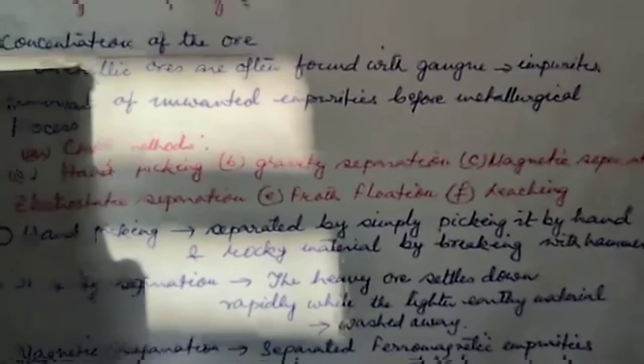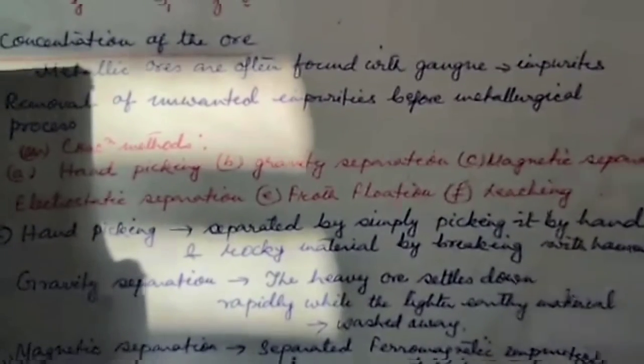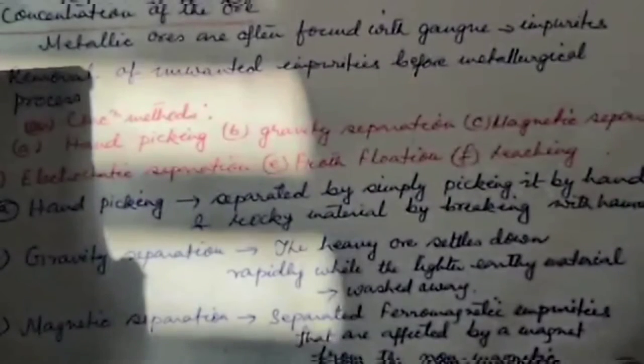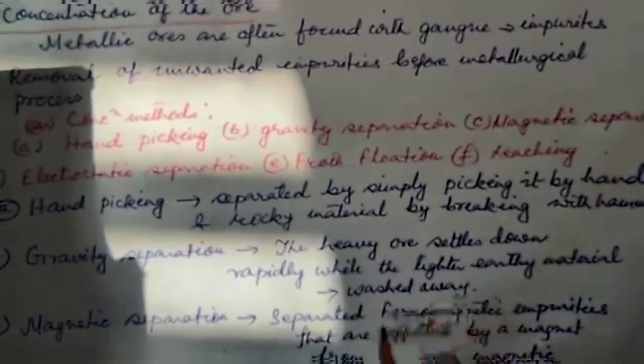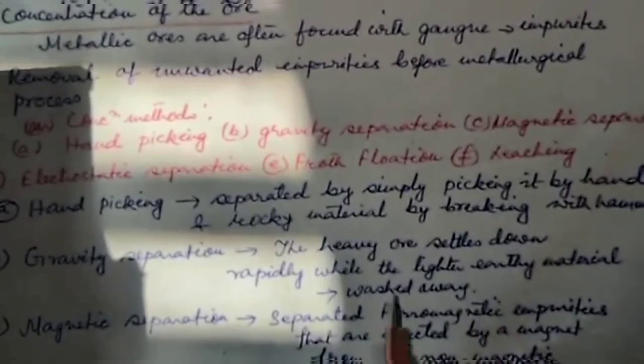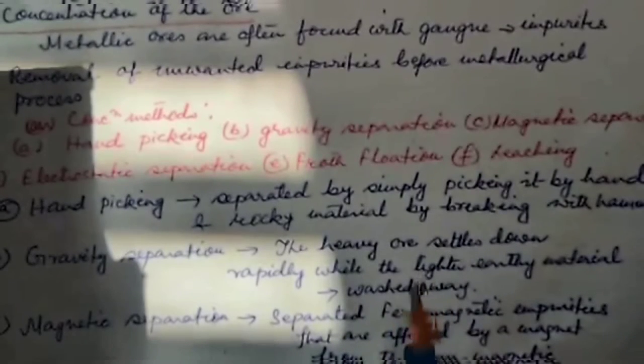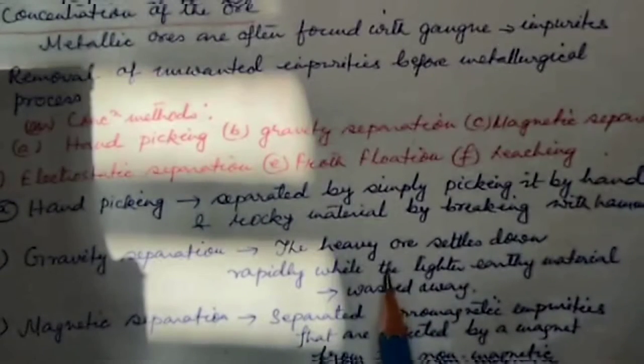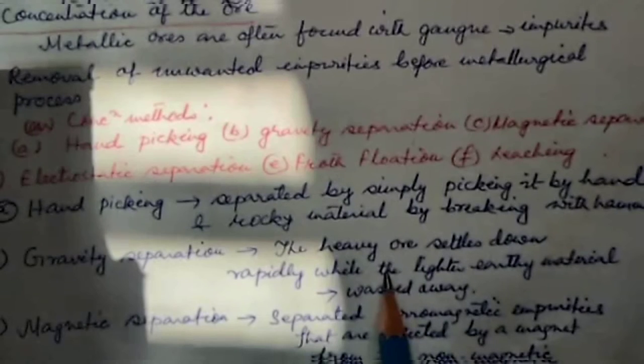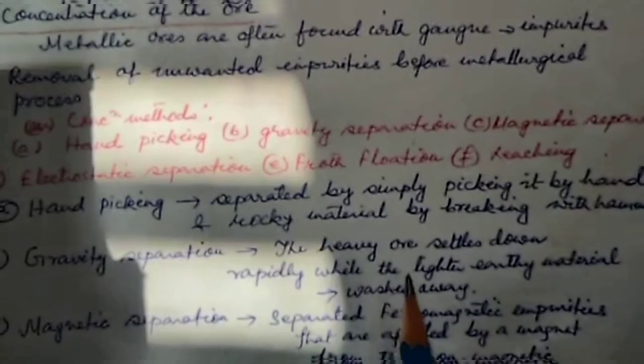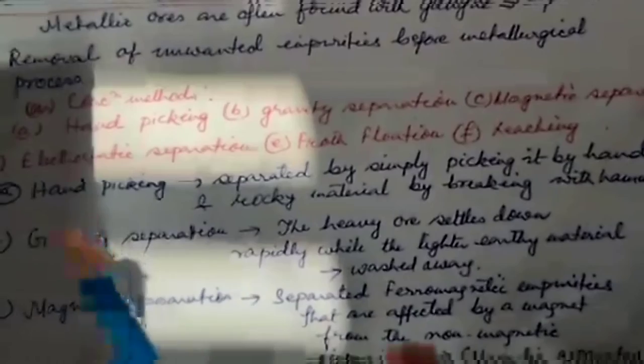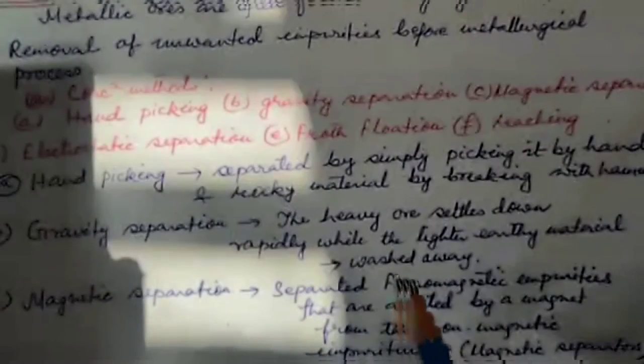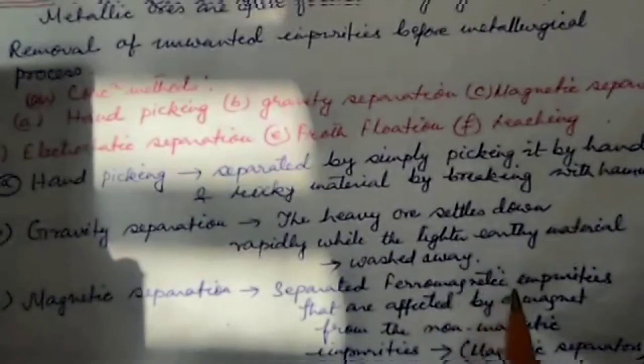Gravity separation: In this case, the ore is crushed and ground and is washed with a running stream of water. The heavy ore settles down while the lighter material, that is the impurities, is washed away.